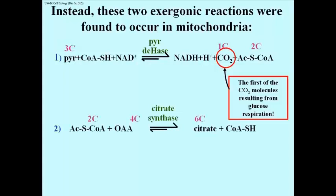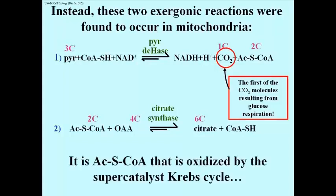The other reaction takes one of the products — acetyl-S-coenzyme A — and links it with oxaloacetate (OAA) to make the first component of the citric acid cycle, namely citric acid. It is acetyl-S-coenzyme A that is oxidized by the super catalyst Krebs cycle, and the enzyme that does it is citrate synthase.